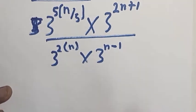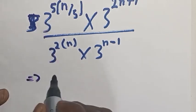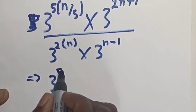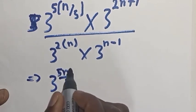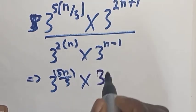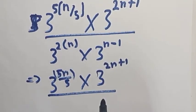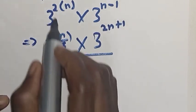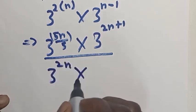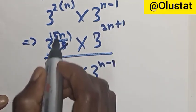Now let's move to the next step. Opening the bracket, this can be expressed as 3 raised to power 5n over 5, then multiplied by 3 raised to power 2n plus 1, over — opening the bracket — 3 raised to power 2n, multiplied by 3 raised to power n minus 1. Then, this 5 can cancel this 5.